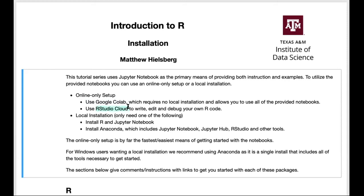The second bullet in the online only setup talks about RStudio Cloud. RStudio Cloud doesn't actually support Jupyter Notebook — they have something they call R Markdown, which provides sort of a subset of the functionality. So you would still really need Google Colab or one of the local installation options if you want to use Jupyter Notebooks. But it's listed here because it's an integrated development environment, or IDE, which contains a number of useful tools for developing and debugging R code.